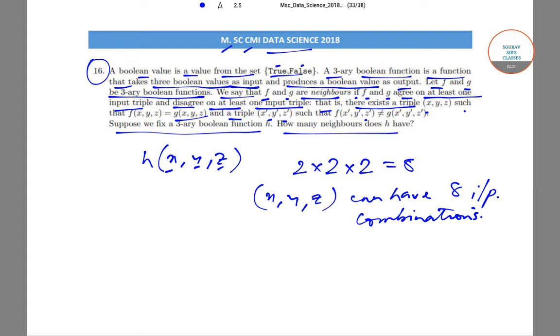Now if some function has to be a neighbor of h, then out of this we have eight possible combinations. So out of those eight combinations, maybe there may be another function, suppose j.